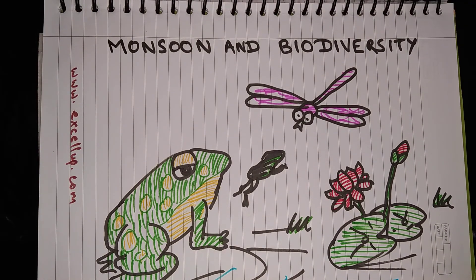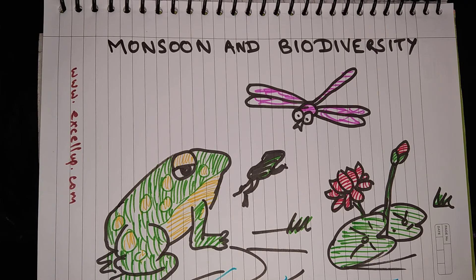Regarding monsoon and biodiversity: the plants and trees become lush green during the rainy season. Frogs come out of hibernation and start croaking in order to get busy in reproduction. This is the breeding season for many animals, birds, and insects. Broadly speaking, this is the season when biodiversity is immensely enriched, and thus monsoon enriches our whole environment. That's all for this lesson, thank you.